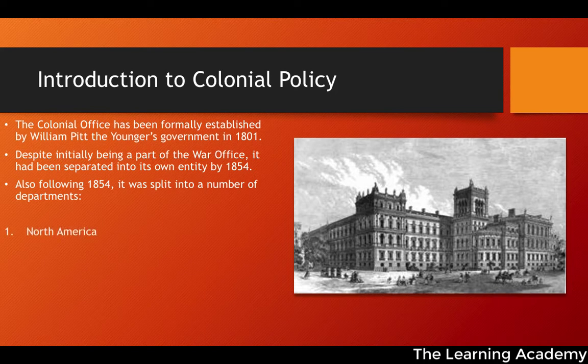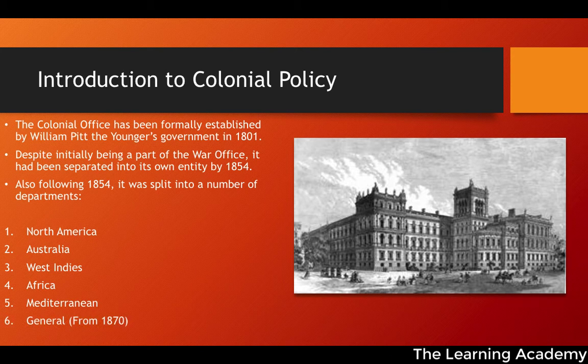The colonial office was divided into sub-departments: the North American Department, Australia, West Indies, Africa, and Mediterranean. From the 1870s, there was also a general office not focused on any specific area. We can see that the expansion of the British Empire required expansion within the administration of colonial and imperial policy, with different sub-departments focusing on specific areas of the world.